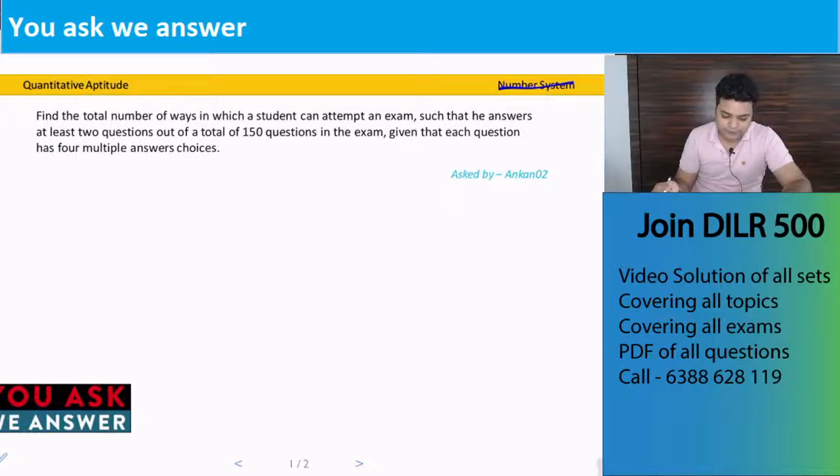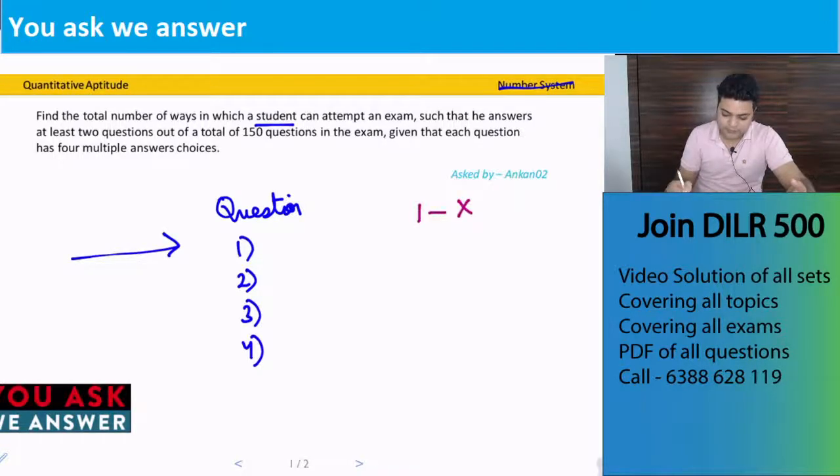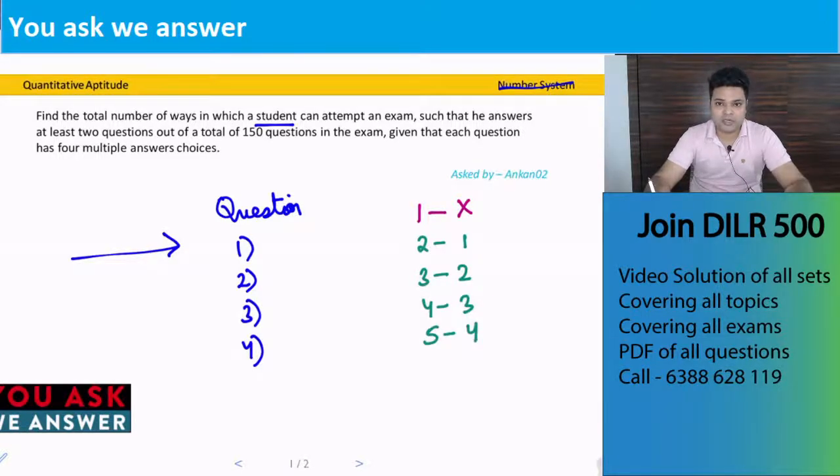To a particular question, let's first look at this. This question has 4 options. So this student has how many options for this particular question? First option is don't attempt the question. Second option is attempt the question and mark option one. Third is attempt and mark two. Fourth is attempt and mark three. And fifth is attempt and mark four. So for each question this student has five options.